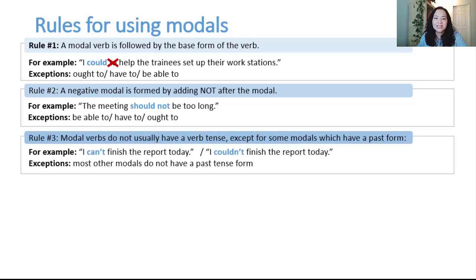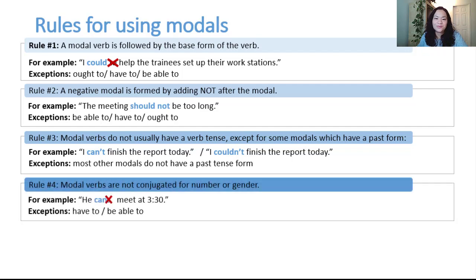Rule number three: modal verbs do not usually have a verb tense except for some modals which have a past form. For example, I can't finish the report today, I couldn't finish the report today. Exceptions, most other modals do not have a past tense form. Rule number four: modal verbs are not conjugated for number or gender. For example, he cans me at 3:30, the correct sentence is he can meet at 3:30. Exceptions: have to and be able to.